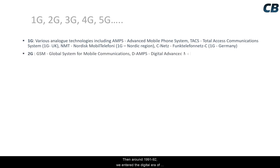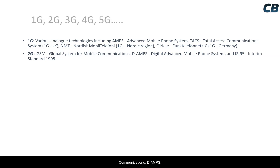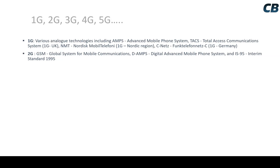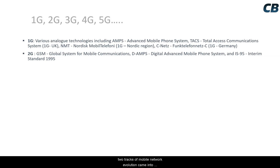Around 1991–92, we entered the digital era of mobile communications. Key technologies of that era include GSM (Global System for Mobile Communications), D-AMPS (a digital version of AMPS), and IS-95, commonly known as CDMA1. This introduced two tracks of mobile network evolution: the GSM track based on FDMA and TDMA, and the IS-95 track based on CDMA technology.